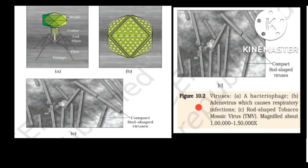Figure 10.2 shows various viruses. Figure a shows a bacteriophage with structures including head, collar, tail plate, pins, and prongs for attachment on bacteria. Figure b shows adenovirus, which causes respiratory infections. Figure c shows rod-shaped tobacco mosaic virus, magnified about 1,50,000 times.